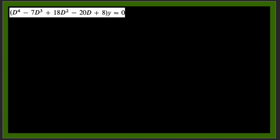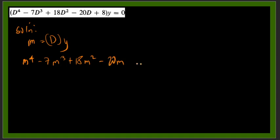If you notice, our given problem is already in the D operator form, so we could go directly now to our auxiliary equation. Our m equals D, so we will have m to the fourth minus 7m cubed plus 18m squared minus 20m plus 8 equals 0.